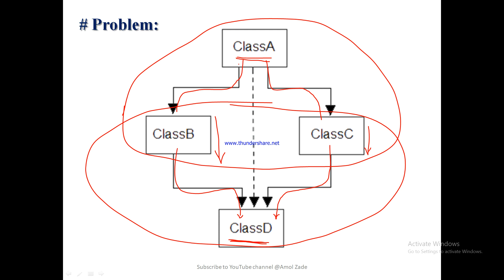The compiler gets confused about which copy of class A to execute — whether the copy received from class B or the copy received from class C. The compiler goes into an ambiguous state and gives an error that multiple copies of class A are received into class D. This kind of error is called the ambiguity problem. To solve it, we use the virtual base class.